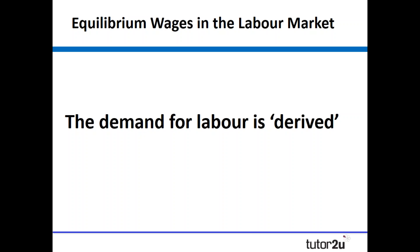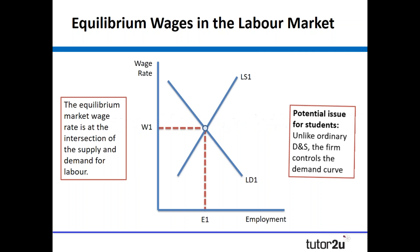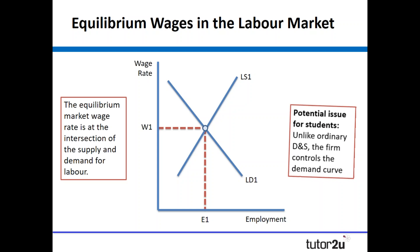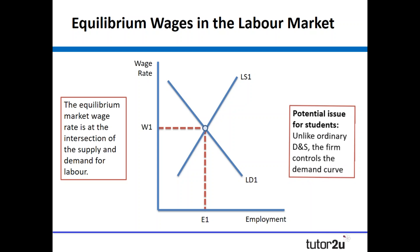Quick reminder: the demand for labour is derived. We demand labour so that labour can produce products or undertake services for us, so it's completely dependent on the demand for those products and services. We illustrate it using labour demand and labour supply curves, looking very similar to demand and supply curves that students have drawn before. A reminder though — students often forget to alter the axes for this, so make sure they label the diagram correctly. One thing students find a little strange is that this time the firm is in control of the demand curve and it's the individual, or groups of individuals, making the supply.